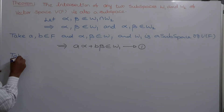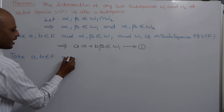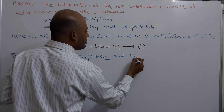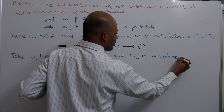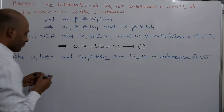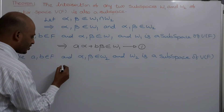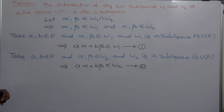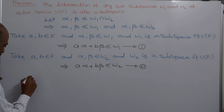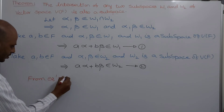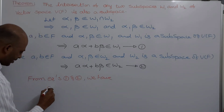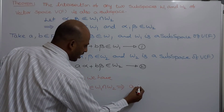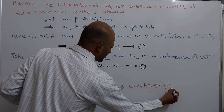Again, a, b belong to f and alpha, beta belong to w2 because they are common elements for w1 and w2, and w2 is a subspace of v of f. Every subspace satisfies this condition, which implies a*alpha + b*beta belongs to w2. Let this be equation number two. From equations 1 and 2, we have: for a, b belonging to f and alpha, beta belonging to w1 intersection w2, it implies a*alpha + b*beta belongs to w1 intersection w2.